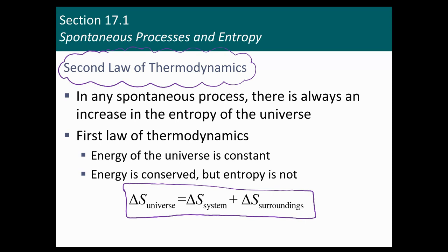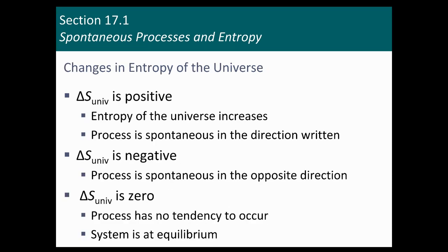What we're going to do in the next few slides is break this up and ask: what determines delta S of the system, and what determines delta S of the surroundings? If we know both, we can decide whether delta S of the universe is increasing or not. If delta S of the universe is positive, the process is spontaneous as written. If it's negative, the process is spontaneous in the opposite direction. If it's zero, the system is in equilibrium.